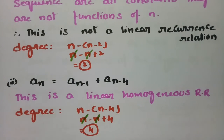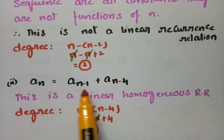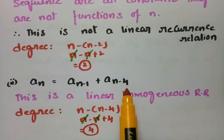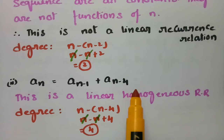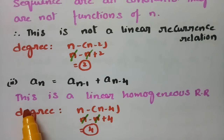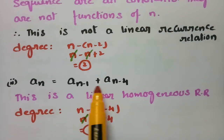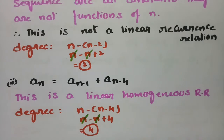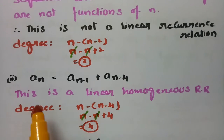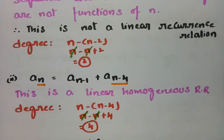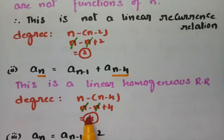The second example is aₙ = aₙ₋₁ + aₙ₋₄. This is a linear homogeneous recurrence relation since all the coefficients of the terms are constants. The degree is the difference between the greatest subscript n and the least subscript n−4, so the degree is equal to 4.